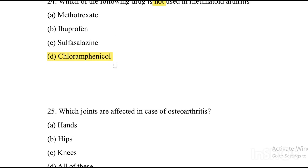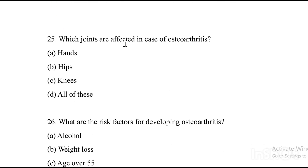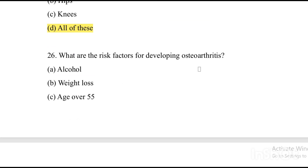Next question: Which joints are affected in case of osteoarthritis? Option A: hands. Option B: hip. Option C: knee. Option D: all of these. The answer is Option D, all of these — hands, hips, and knees are all affected by osteoarthritis.